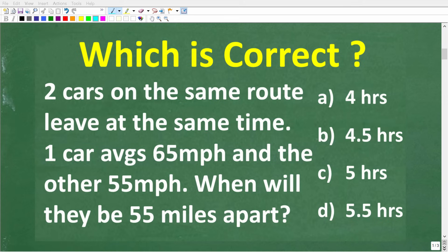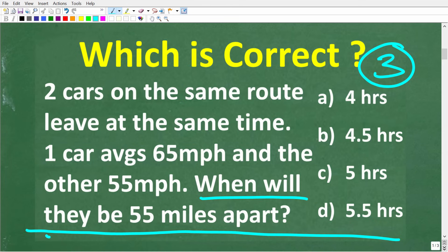Okay, so let's see exactly how to solve this problem. The first step in solving any math word problem is to make sure you actually understand what's going on. A good way to do that is to read the problem at least three times. The first time you read a problem, just get a general sense of what's going on. The second time you read the problem, start bringing in some details. But the third time, make sure you actually understand the question. And here the question is, when will these cars be 55 miles apart?